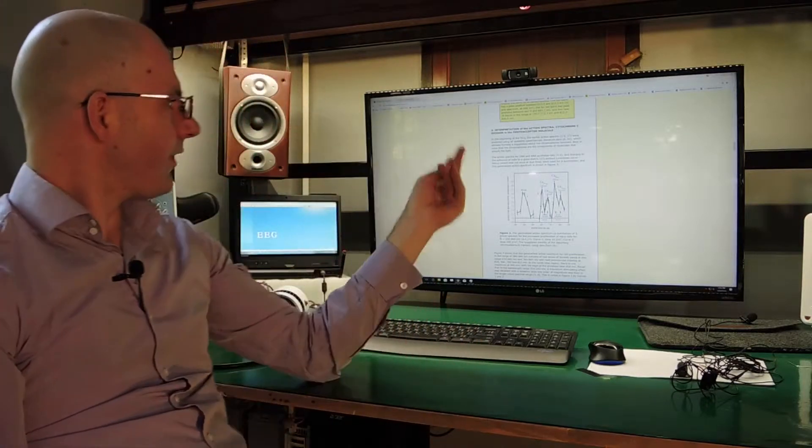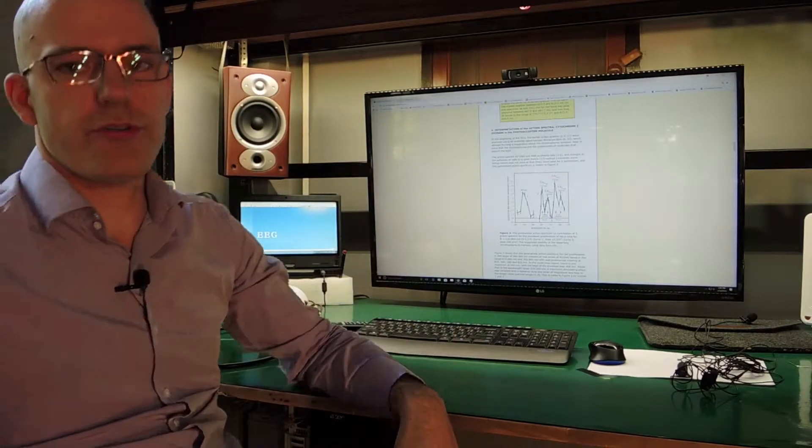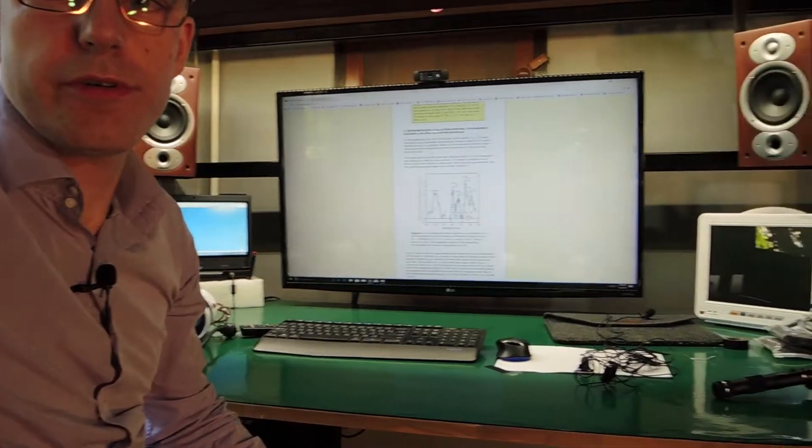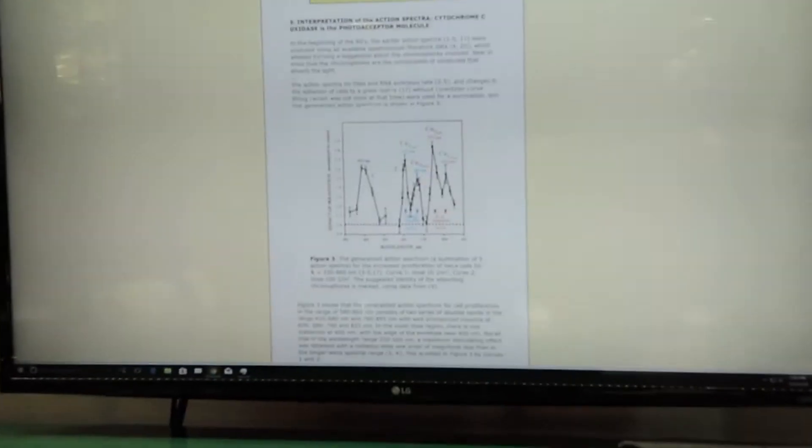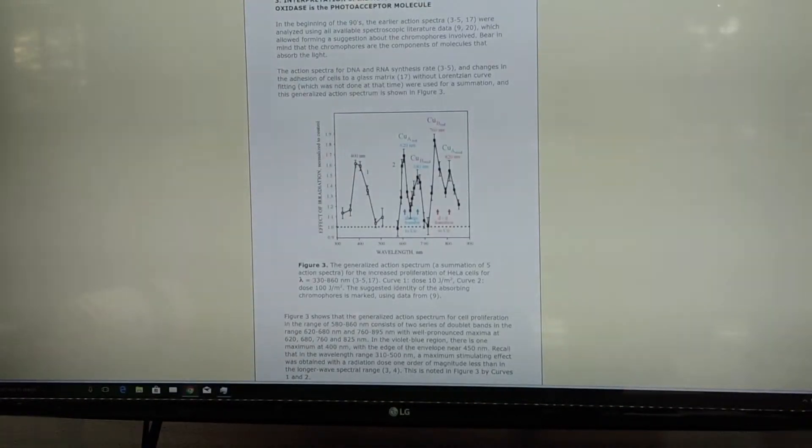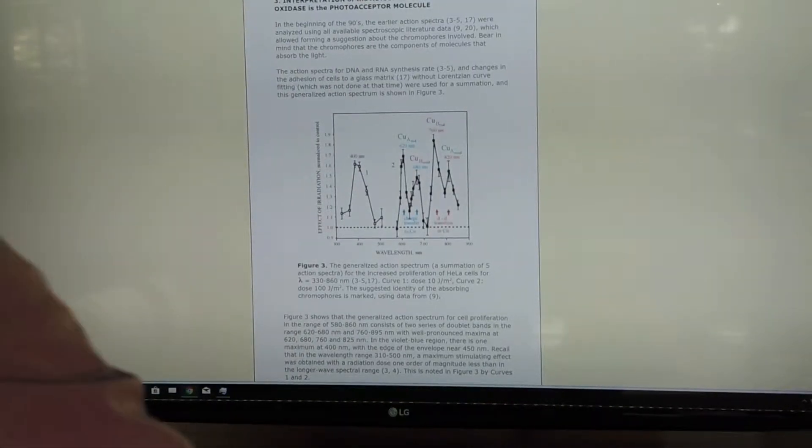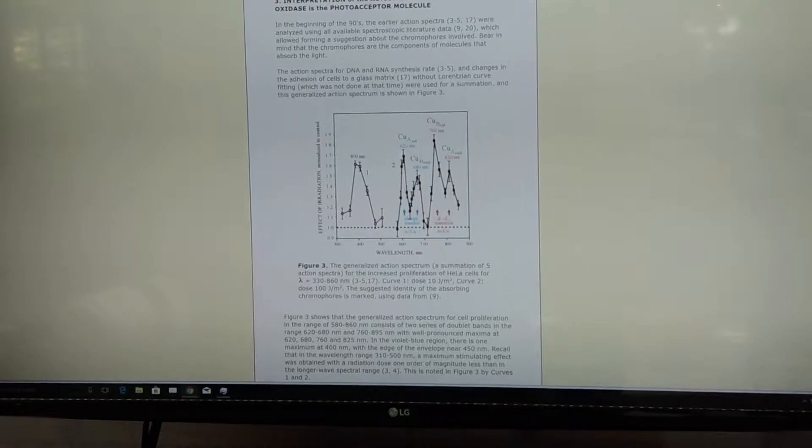Meanwhile, here I have a report, and this is a report from Russia. Thankfully it is in English and I find this very interesting. This is the active spectra of near-infrared light in our tissue. Essentially what this looks at is what happens if we shine near-infrared light, or actually this is quite a wide spectrum. It's from 300 nanometers all the way down to 900 nanometers.